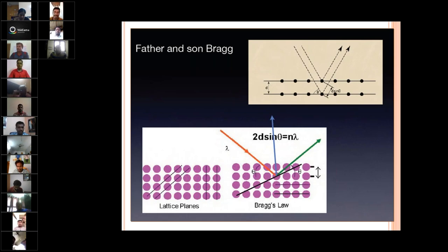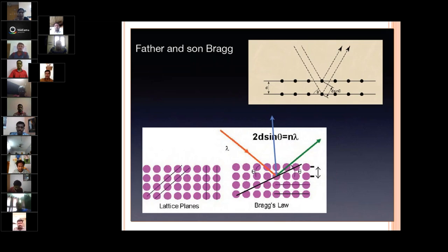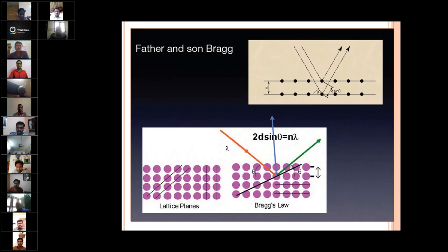Bragg — we know very well — there are two Braggs, father and son, who invented the concept of Bragg diffraction, X-ray diffraction. That is, when your d-spacing is comparable with your lambda, then you can get your diffraction pattern. The diffraction pattern will have maxima and minima depending upon the interplanar distance. Then you can get your Laue pattern. So this is again a milestone in crystallography. These four milestones — starting from Haüy, then Röntgen, then Laue, then Bragg — these milestones are making crystallography a wonderful field and many people are working in it now.